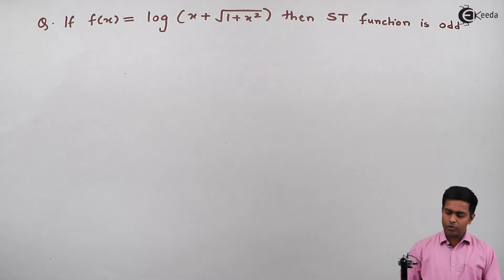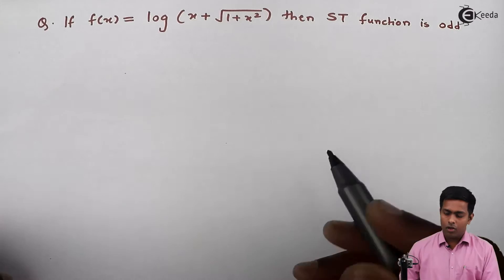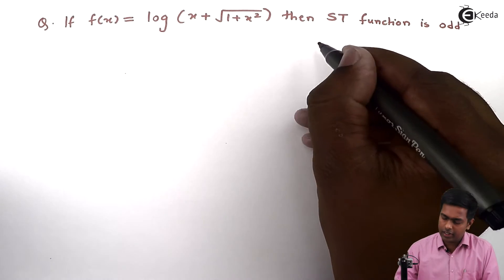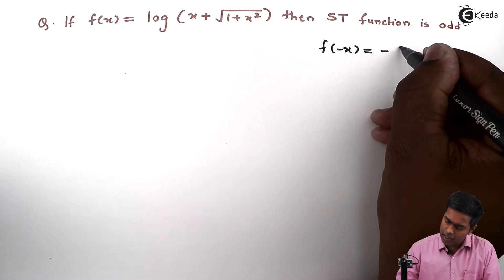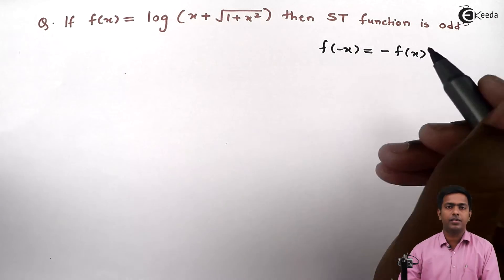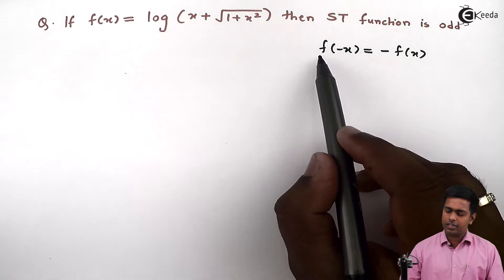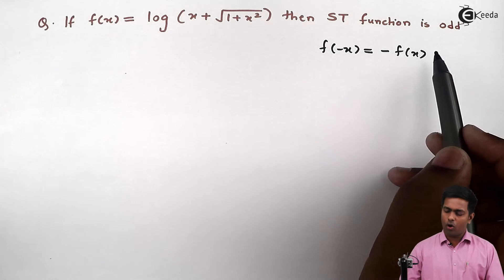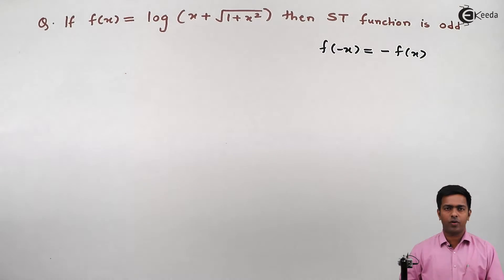Before starting this, let us understand what is an odd function. An odd function is one where the condition f of minus x equal to minus f of x is satisfied. Whenever we get this condition, we say that f of x is an odd function.